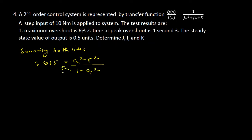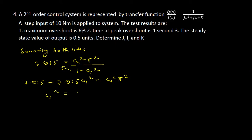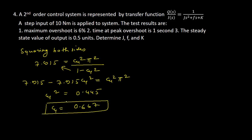Cross-multiplying: 7.915 − 7.915ζ² = ζ²π². Solving this equation gives ζ² = 0.445, therefore ζ = 0.667. This is the value of the damping ratio.